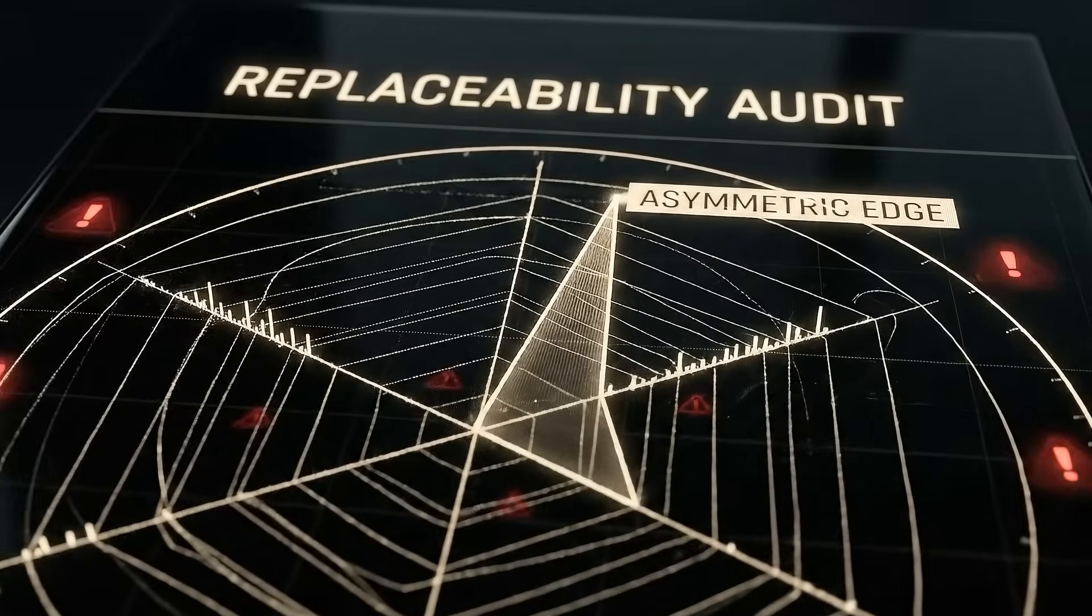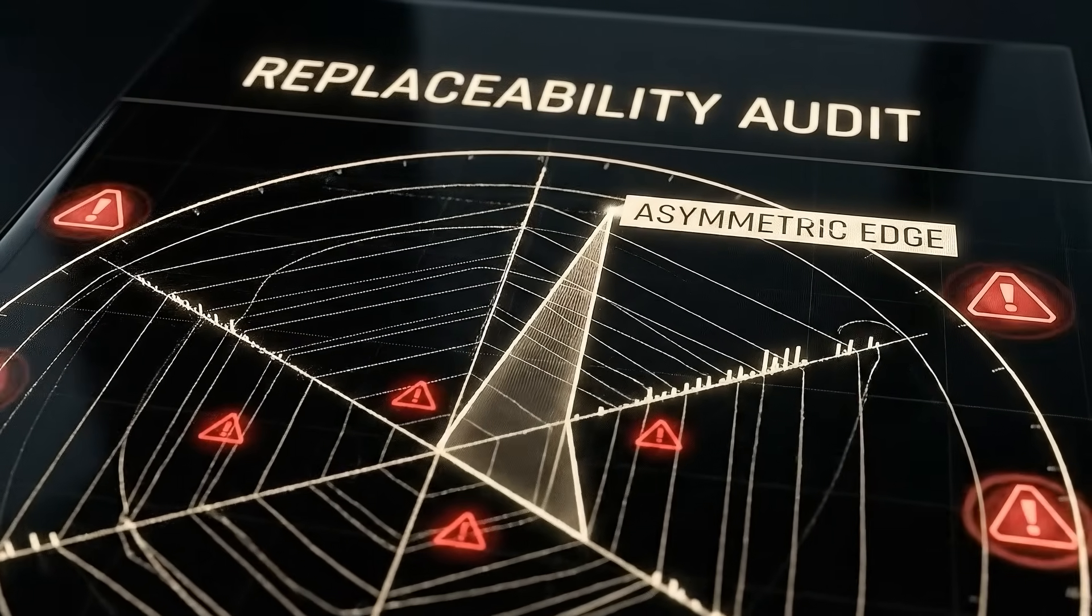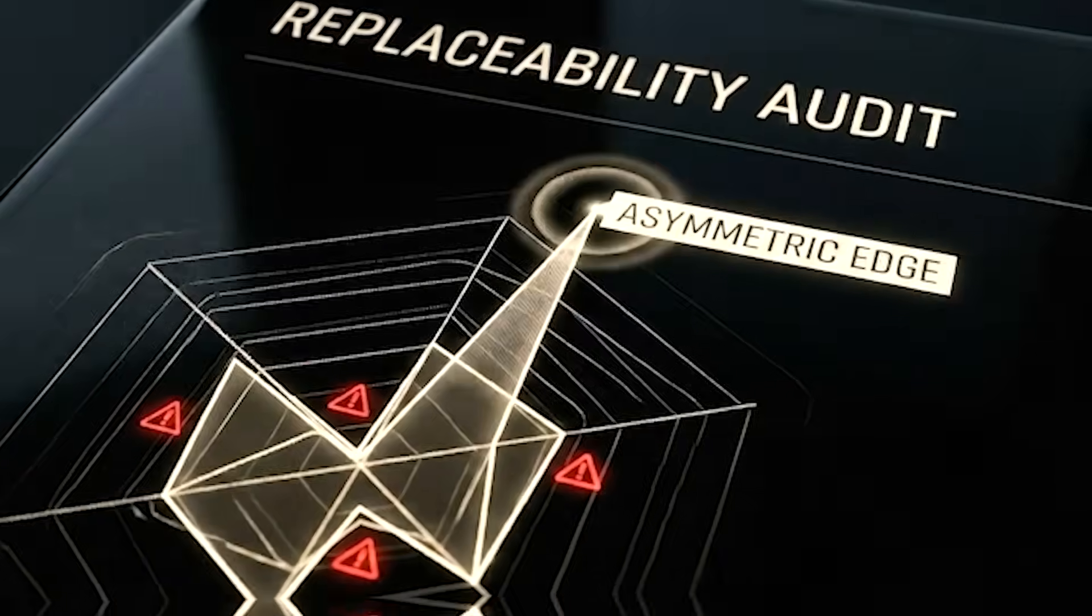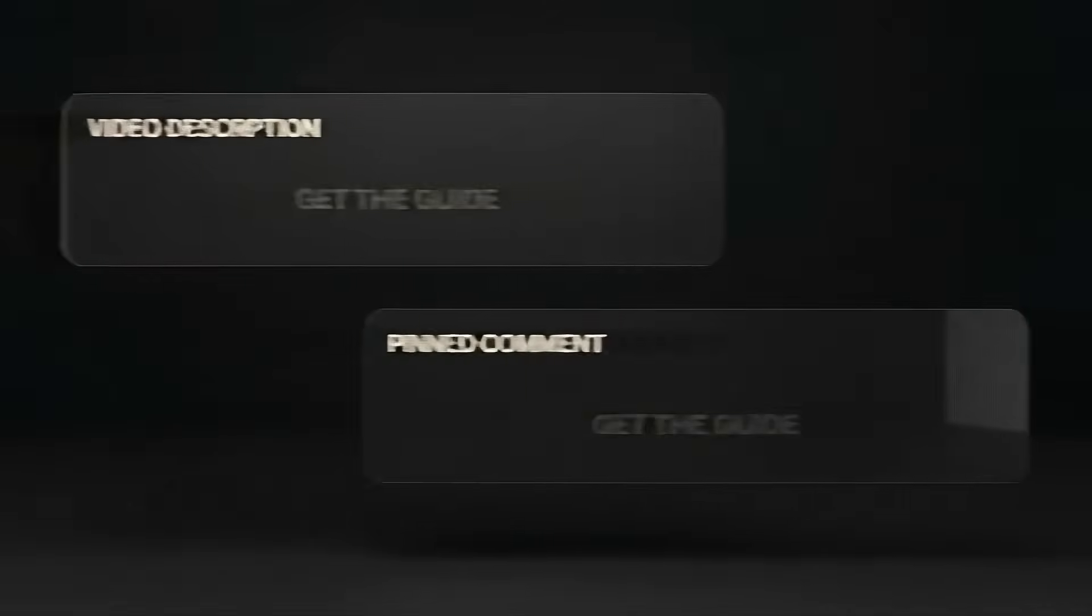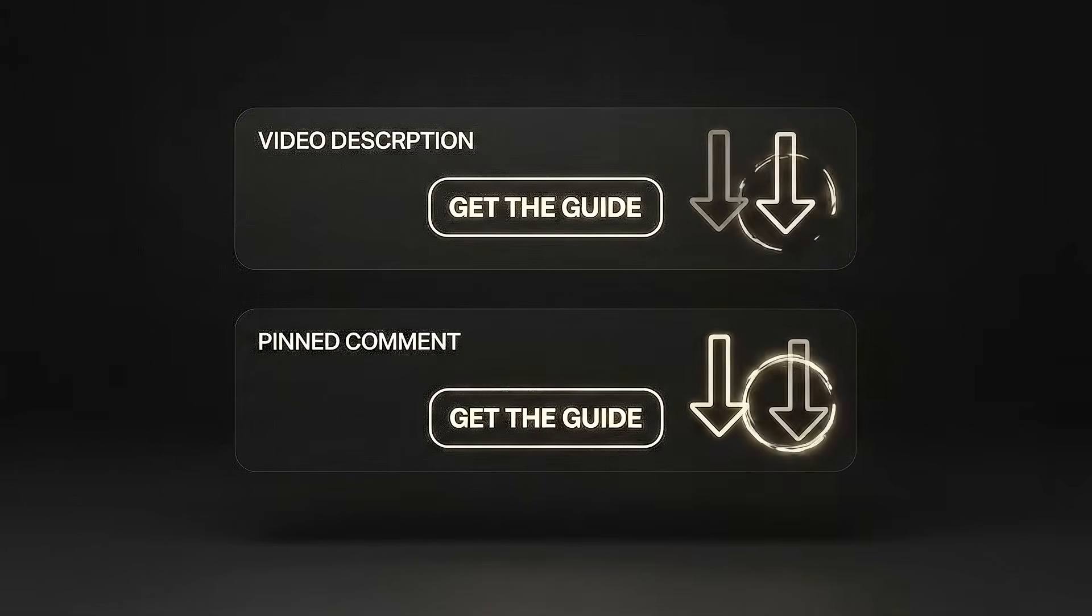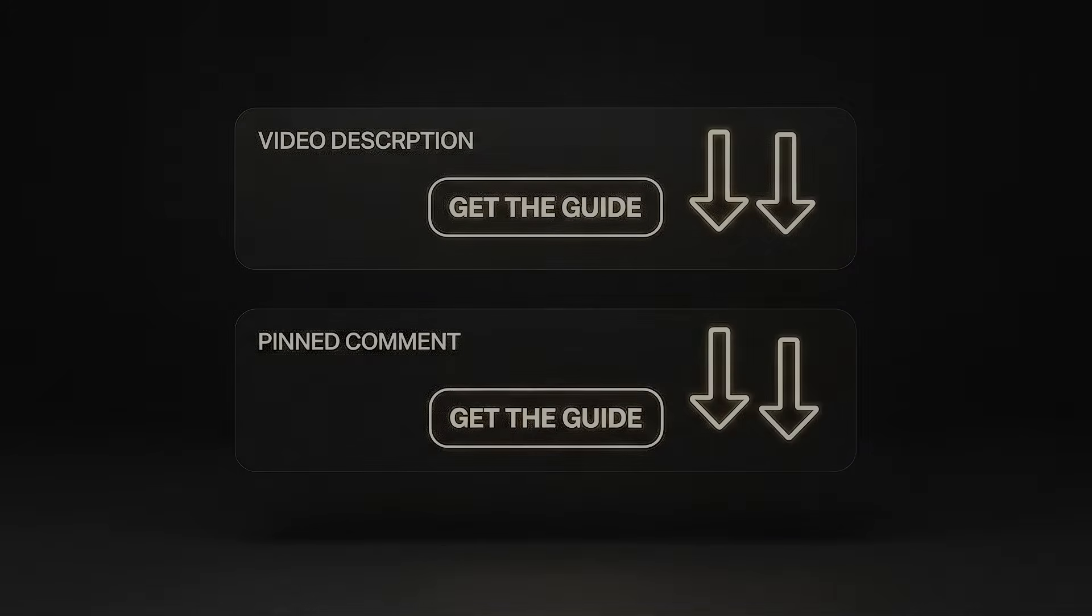It helps you run a replaceability audit on your current role to see exactly which parts of your job are in the danger zone. And more importantly, it helps you find your asymmetric edge, the one specific human skill you have that AI cannot replicate. The link is right there in the description and the pinned comment. Don't wait until the next model drops. Download it, audit yourself and build your moat.